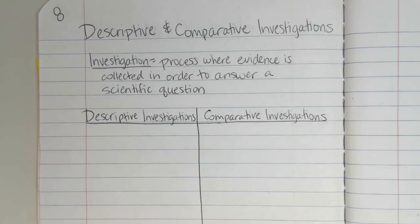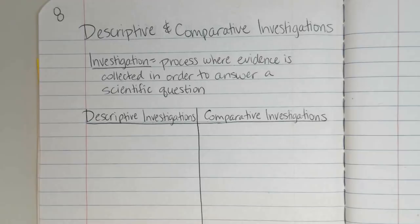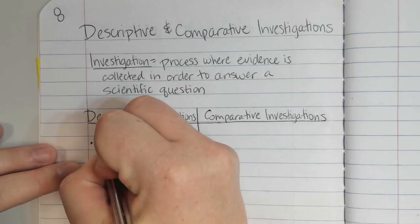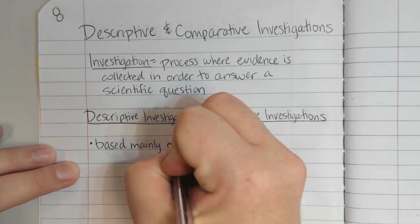Descriptive investigations are just what they sound like — the word 'describe' is the same root word as 'descriptive.' This is where we use a lot of observations to describe different findings. A lot of times astronomers, meteorologists, and geologists will conduct descriptive investigations. They're using careful observations and measurements to help develop findings, especially when we don't know a lot about the subject being investigated. So we're going to say that this is based mainly on observations — and those observations can be qualitative or quantitative.